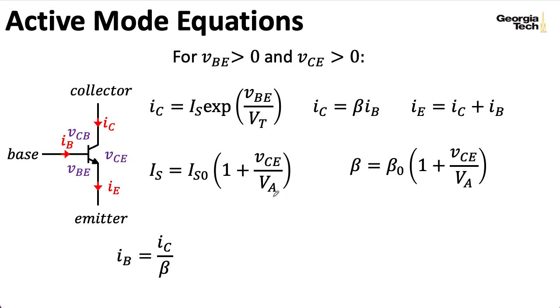In practice, a lot of times VA is assumed to be pretty large. So, we can assume that IS and beta are constant. But we're not always going to assume that.